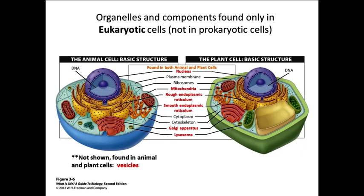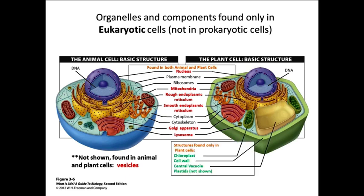Eukaryotic cells differ from prokaryotic cells in that they have organelles. Here is a labeled diagram showing organelles that both plants and animals have, and we're going to talk about each of these, focusing on function. In biology, structure or form gives something its functionality. After covering organelles found in both plants and animals, we'll talk about structures found only in plant cells — four extra things that plants have in addition to everything they share with animals.